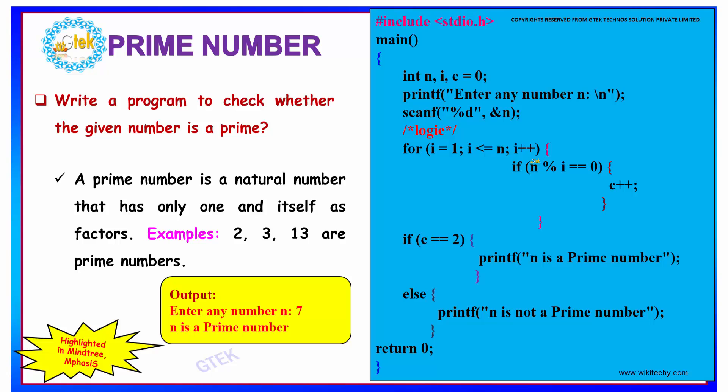The condition states that if the remainder is equal to 0, which means if any number between 1 and 7 divides 7, then c will be incremented.